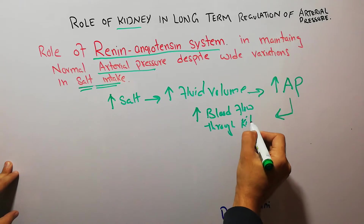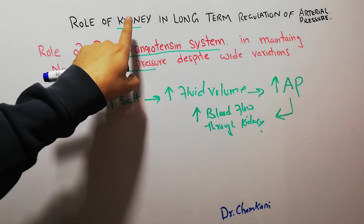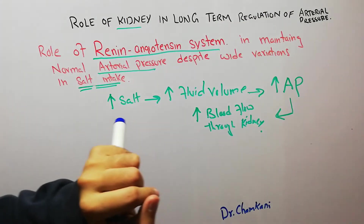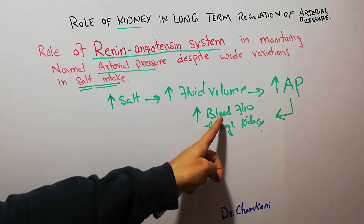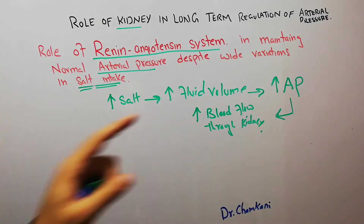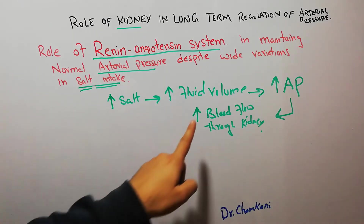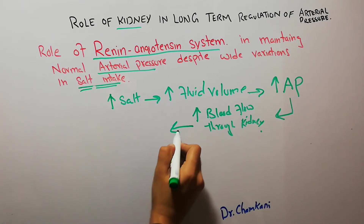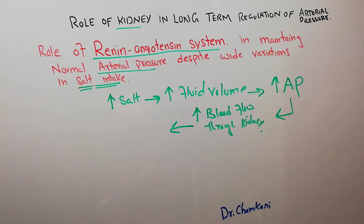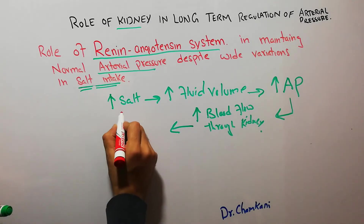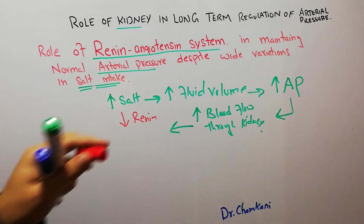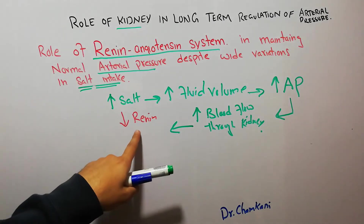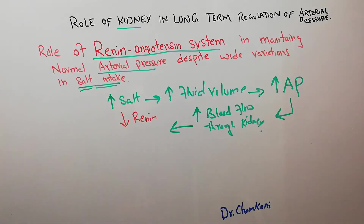So here comes the role of the kidney in regulation of arterial pressure. When the fluid volume increases, it increases the arterial pressure, which increases the blood flow through the kidney. When the blood flow through the kidney increases, the renin secreted from the kidney decreases. The renin which is normally secreted from the kidney decreases when the intake of salt increases.